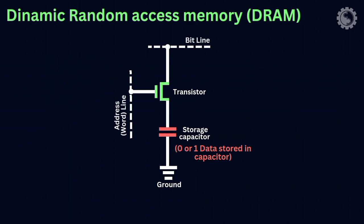To write data to a DRAM cell, the computer sends a signal to the transistor, which turns it off. This traps the electrical charge in the capacitor, which sets the bit of data to 0 or 1.